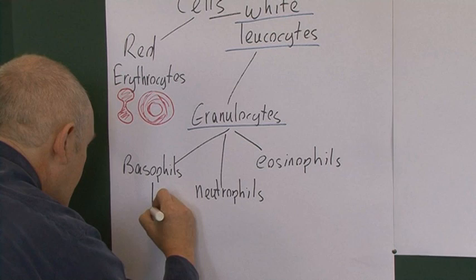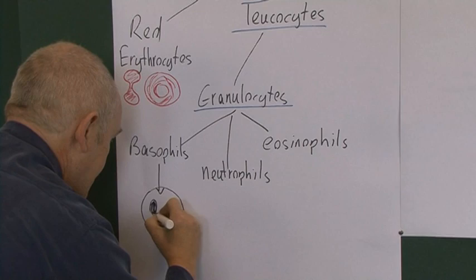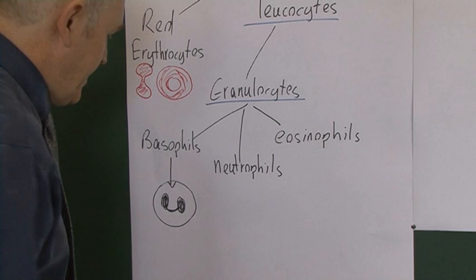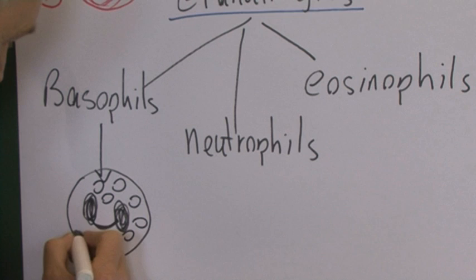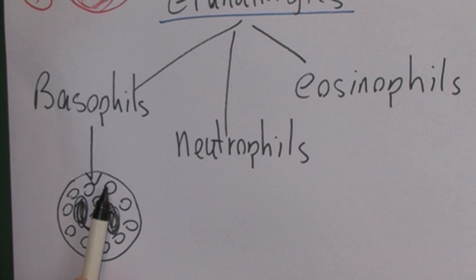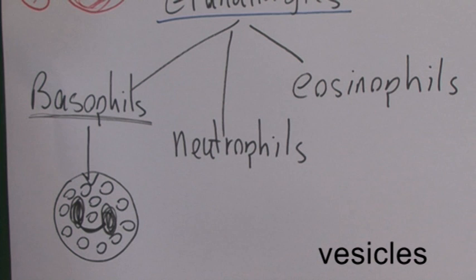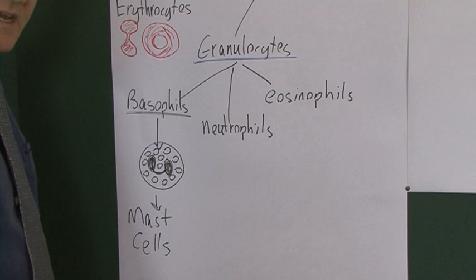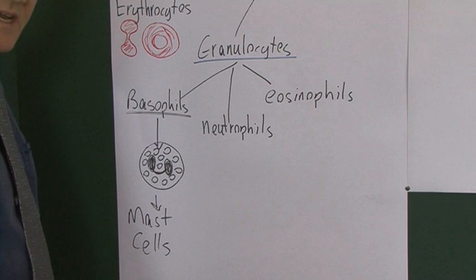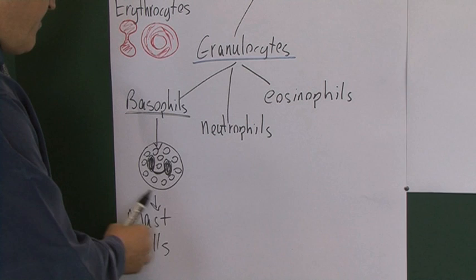The basophils have a lobed nucleus joined together, and they have very large granules — actually vesicles — containing various chemicals in their cytoplasm. There are very few basophils present in the blood, but basophils migrate into the tissues where we call them mast cells. Mast cells are very important in the local inflammatory response.